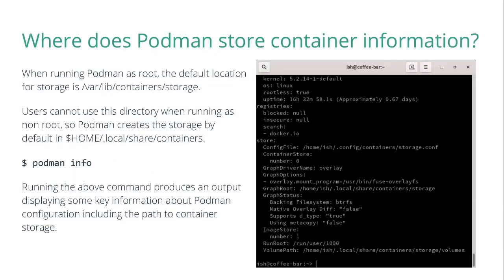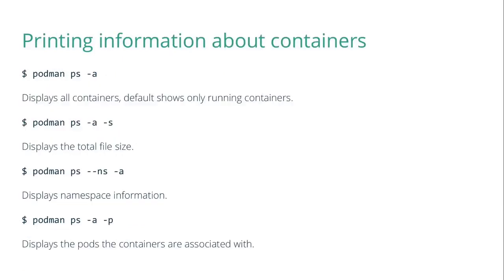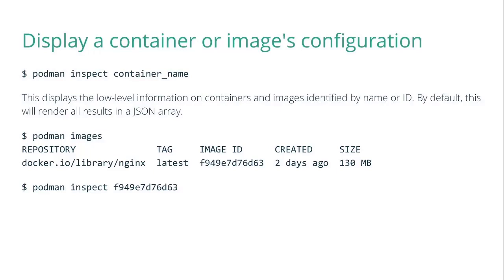The podman info command displays useful information such as where container resources are stored. Podman has similar options and flags to Docker — you can mount a volume to a path on the host machine and map the container's port 80 to the host port 8080. Commands can be executed inside a running container using the podman exec option. Running containers and images can be analyzed using the podman inspect command, which can provide network information and mount points.